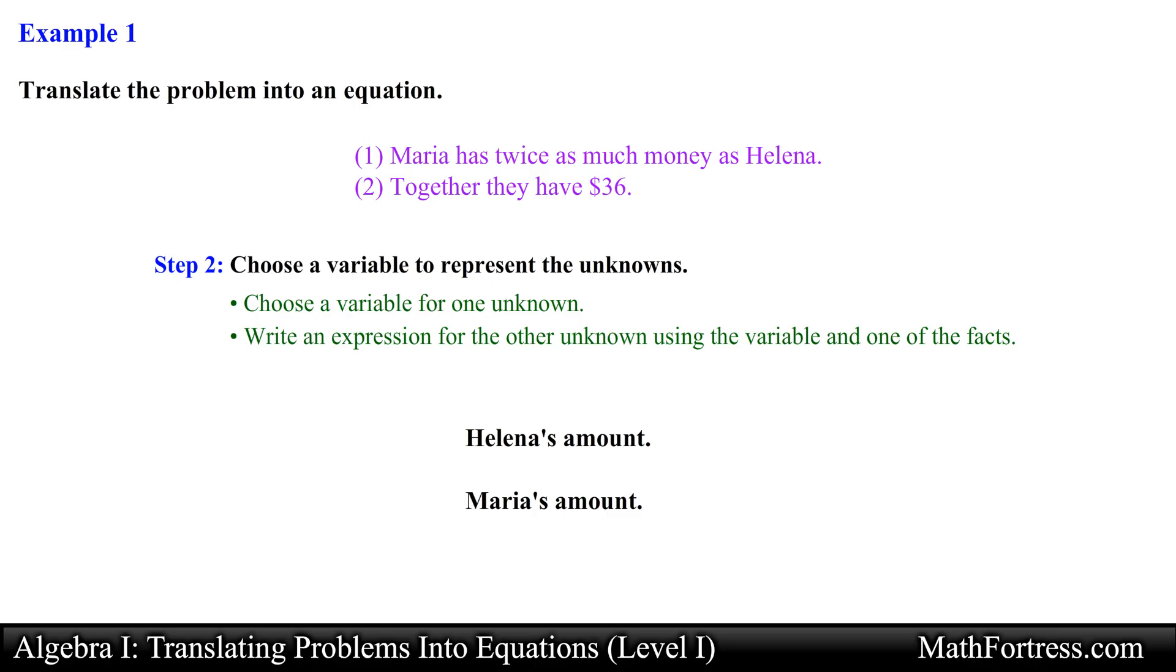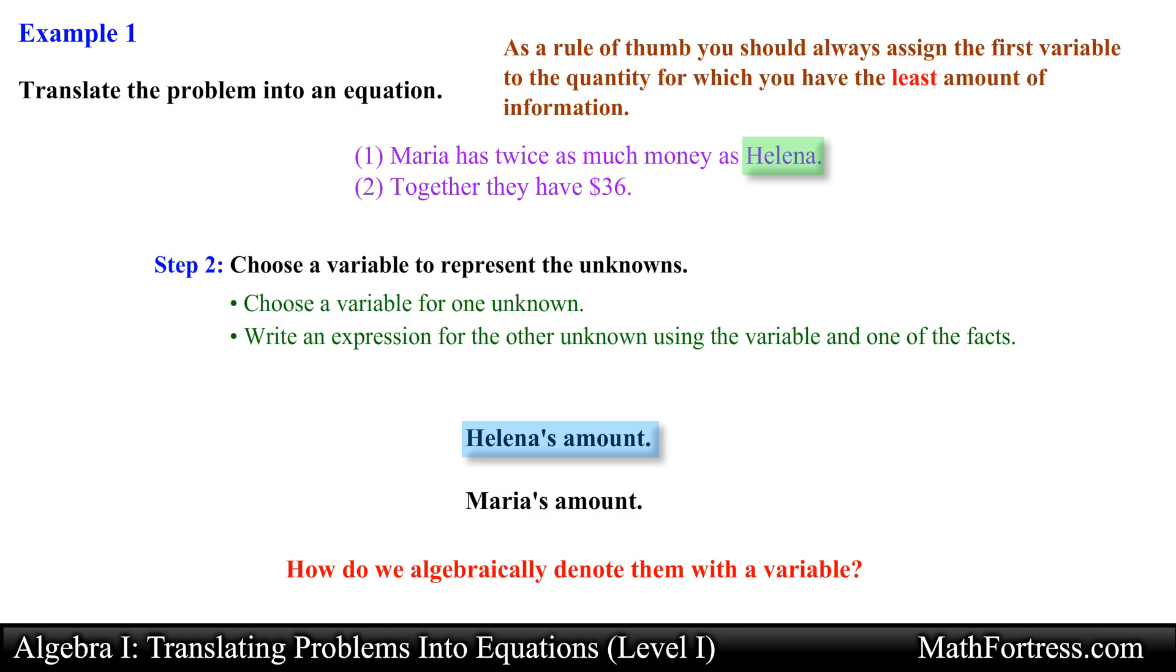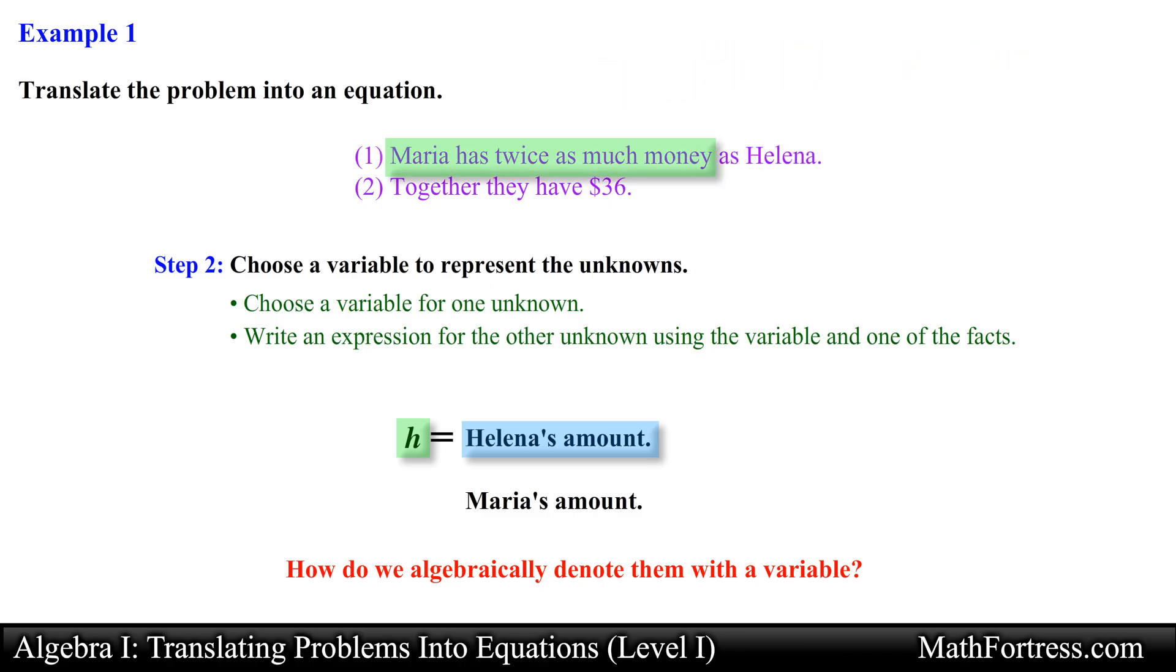In step 2 we go ahead and assign variables to our unknowns. Many students have a hard time with this step. So let's focus on this step. We already know that our unknowns represent the amount of money that Maria and Elena have. The question we should ask ourselves is how do we algebraically denote them with a variable. From the first sentence we know that Maria has twice as much money as Elena. We are actually given some kind of relation between Maria's amount and Elena's amount. This is not the case for the amount of money that Elena has. As a rule of thumb you should always assign the first variable to the quantity for which you have the least amount of information. In this case we really don't know much about Elena's amount so let's go ahead and assign this quantity with the letter h. Now if we use this variable along with the first sentence we can represent Maria's amount as 2h for twice as much.